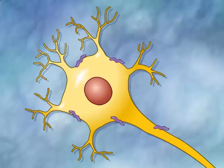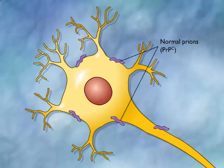The normal prion protein, PRPC, is bound to the surfaces of neurons, and the gene for PRP is present in normal vertebrates and invertebrates.